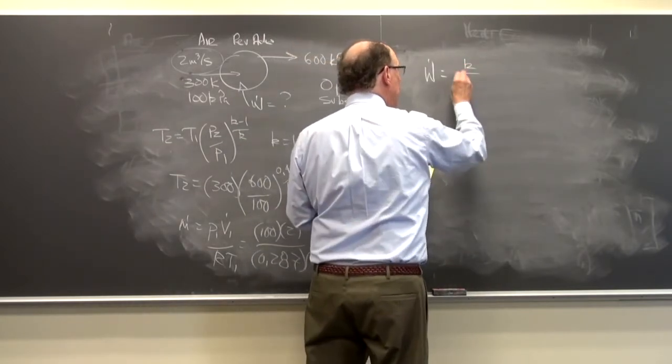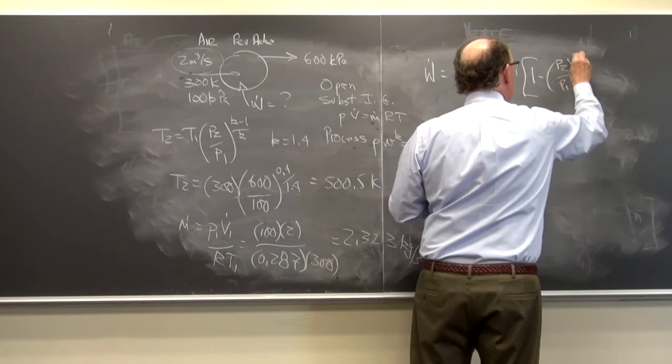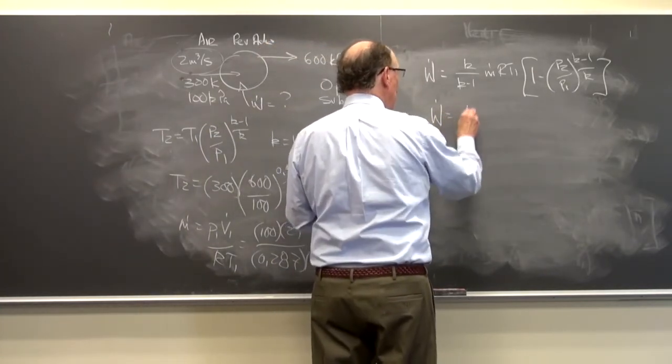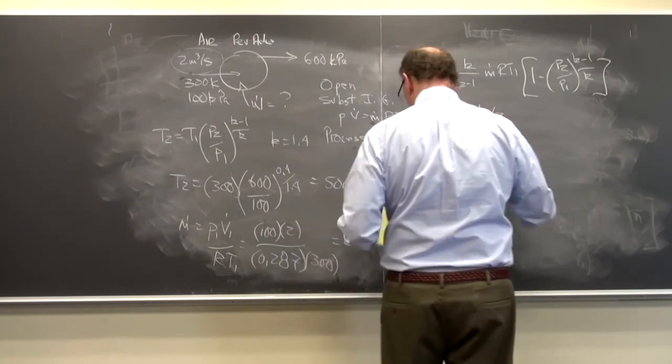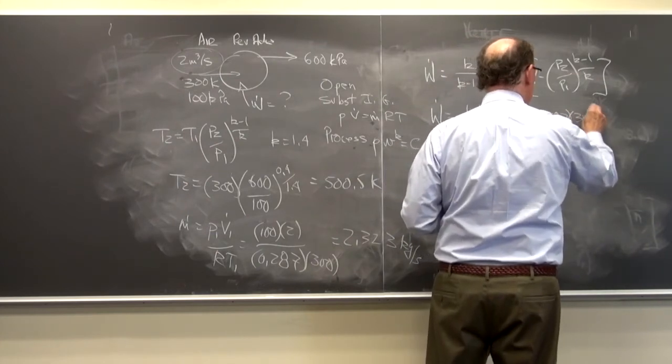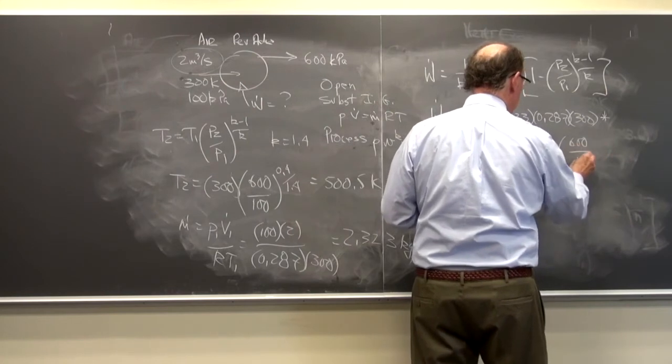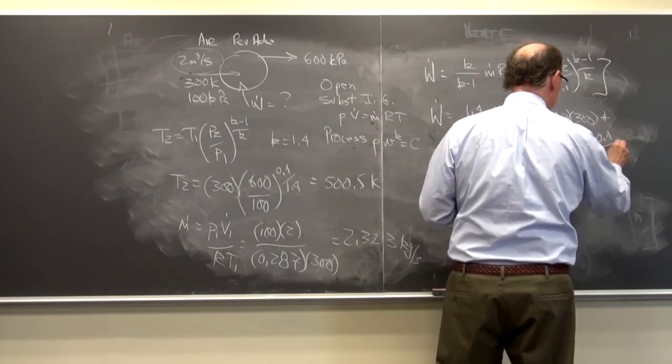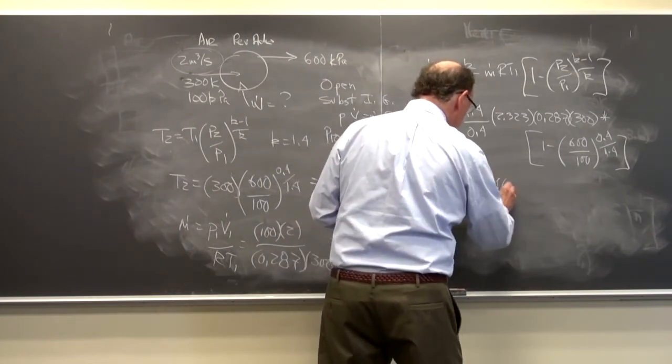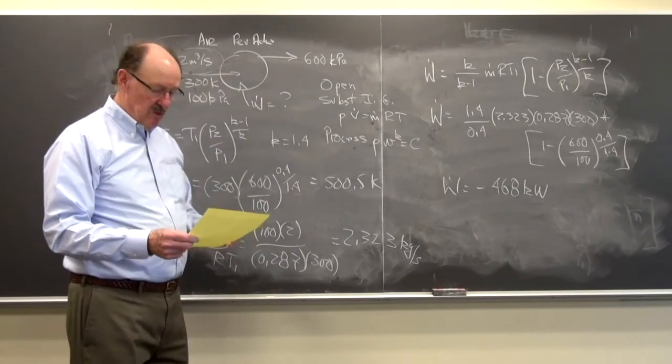So the power is equal to K over K minus 1 times M dot RT1 times 1 minus P2 over P1 to the K minus 1 over K. So I can apply that and now I'm going to substitute in all the values. 1.4 over 0.4 times 2.323 times 0.287 times T1 300 times 1 minus P2 600 over 100 to the 0.4 over 1.4. And so I can solve for the power and the power turns out to be minus 468 kilowatts. So that's the power that had to go in to compress this gas.